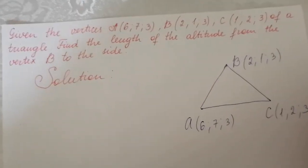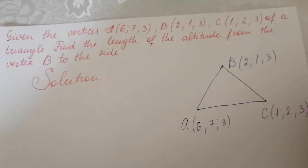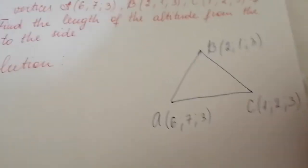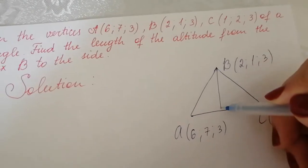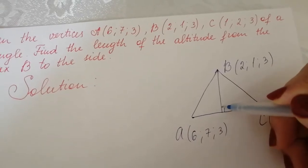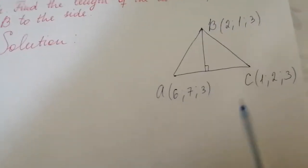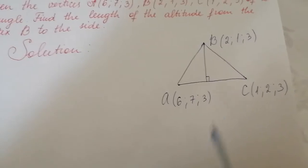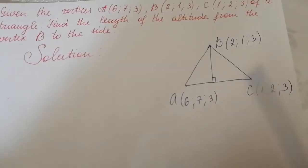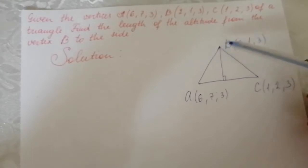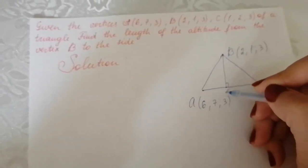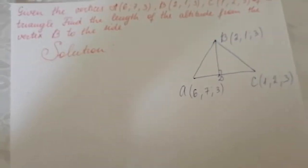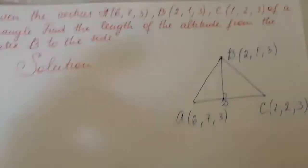Here we have to find the length of the altitude. What is altitude? The altitude is a perpendicular from vertex B to the side AC. We have to find the length BD, where D is the foot of the perpendicular.